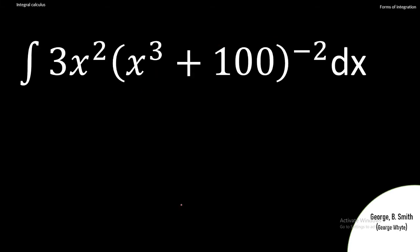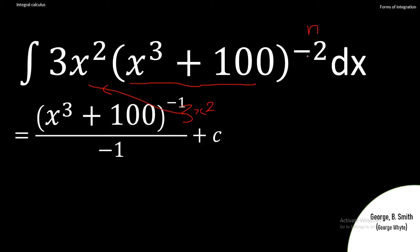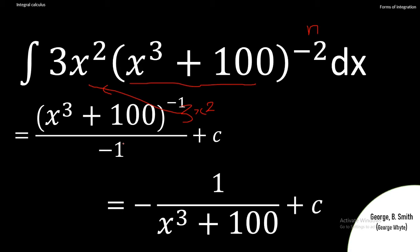Another example: integrate 3x²(x³ + 100)^(-2). If I differentiate x³ + 100, I get 3x², which is exactly what is outside. So I take the power, which is -2, increase it by one to get -1, and divide by that new power of -1. This gives (x³ + 100)^(-1) divided by -1, plus c. Rearranging — taking the minus sign to the top — gives -1/(x³ + 100), plus c.